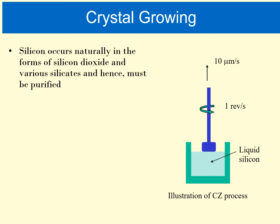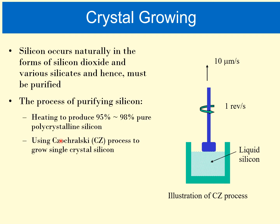This process is called crystal growing — the seed crystal silicon grows into a boule-like structure by pulling with the pullers. Silicon occurs naturally in the form of silicon dioxide, silicon carbide, and various silicates, and hence it must be purified. This heating process purifies silicon to about 95 to 98 percent pure polycrystalline silicon using the Czochralski process.